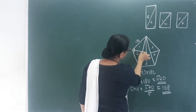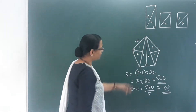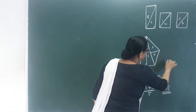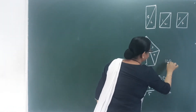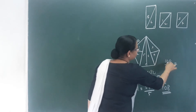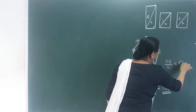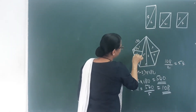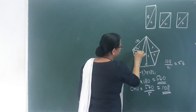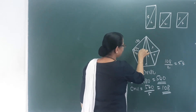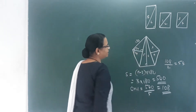We can find each angle from that. Dividing 108 by 2 gives 54 degrees. So this angle is 54 degrees on each side. This is a right angle triangle — the right angle is 90 degrees.